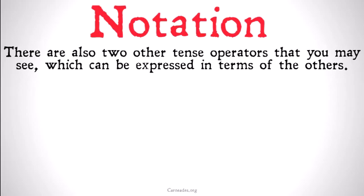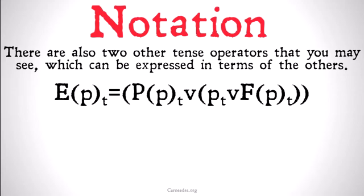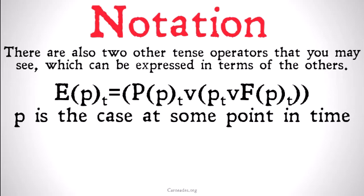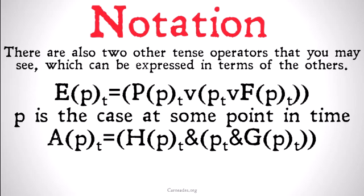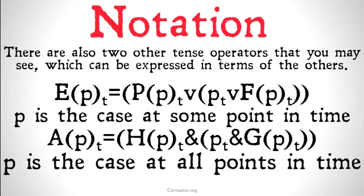Now there are also two other tense operators that you may see. These are kind of secondary tense operators because they can be expressed in terms of the other tense operators we already have. It's going to be E(p)_t, which is identical to P(p)_t or p_t or F(p)_t. What does that mean? E(p)_t means p is the case at some point in time. So at some point in time, either in the past, now, or in the future, p was the case, which is exactly what that definition says. A(p)_t on the other hand is going to be p is the case at all points in time. So p has always been the case, it is the case now, and it will always be the case. These, once again, are also going to be used as TODEF.